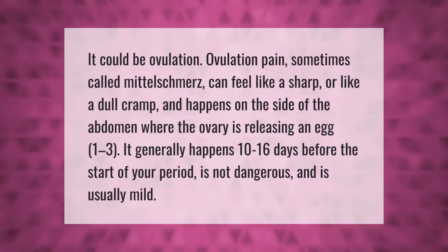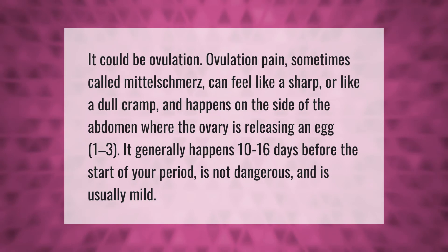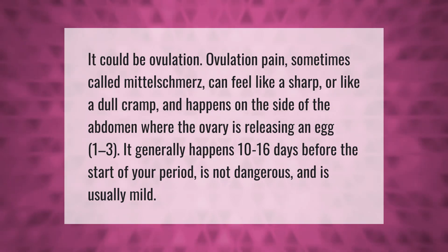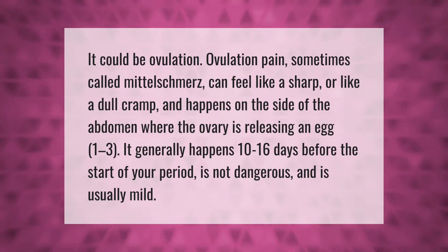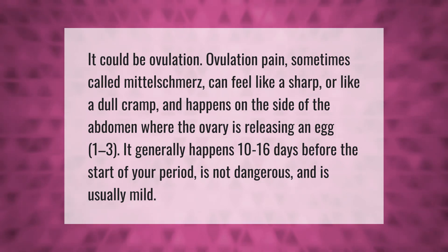It could be ovulation. Ovulation pain, sometimes called Mittelschmerz, can feel like a sharp or dull cramp and happens on the side of the abdomen where the ovary is releasing an egg. It generally happens 10 to 16 days before the start of your period, is not dangerous, and is usually mild.